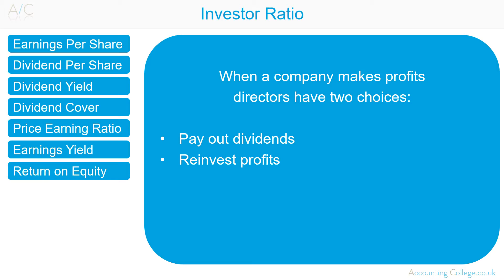Investor ratios can be used to decide the health of an organisation, and knowing how to interpret investor ratios can mean the difference between investing in a good organisation and investing in a bad organisation. When a company makes profits, directors have two choices: either pay out dividends or reinvest profits into the organisation. Some investors are looking for a good yield, while others are looking for growth and are willing to sacrifice short-term returns, wanting the share price to go up in order to make a return.